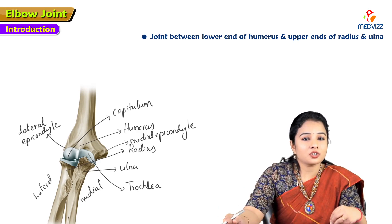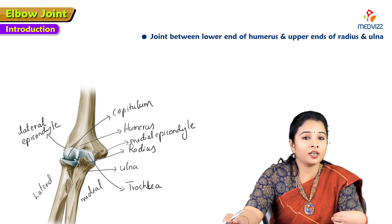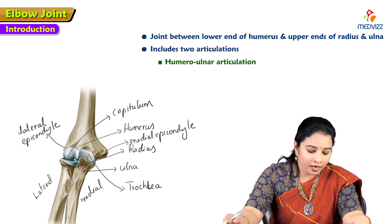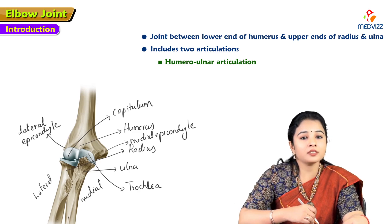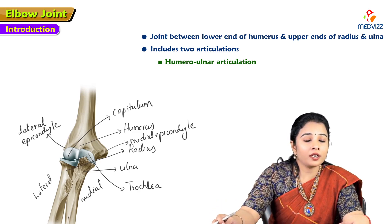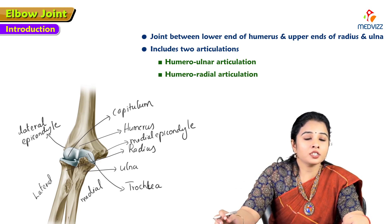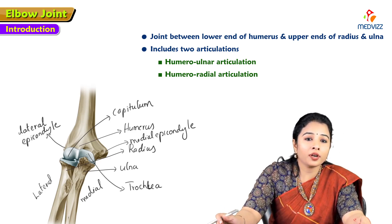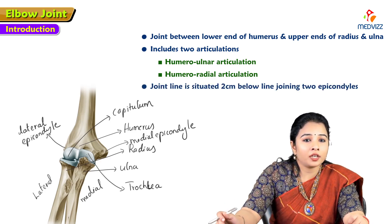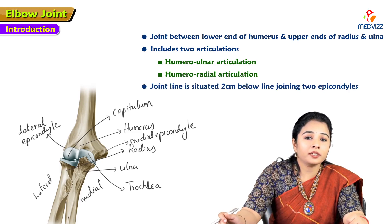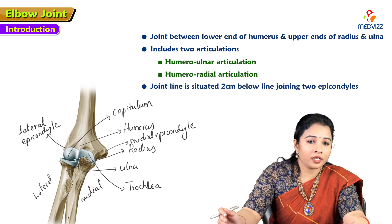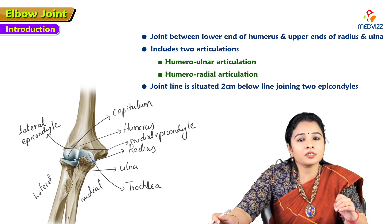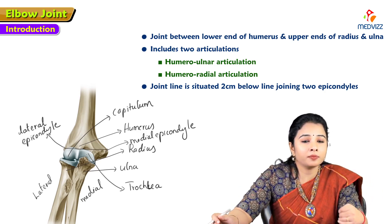The elbow joint is the joint between the lower end of the humerus and the upper ends of the radius and ulna. It includes two articulations: the humero-ulnar articulation, which is the trochlea of the humerus with the trochlear notch of the ulna, and the humero-radial articulation between the capitulum of the humerus and the head of the radius on the lateral side. On the surface, the joint line is situated two centimeters below the line joining the two epicondyles.